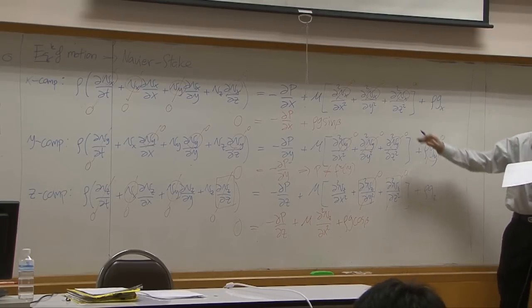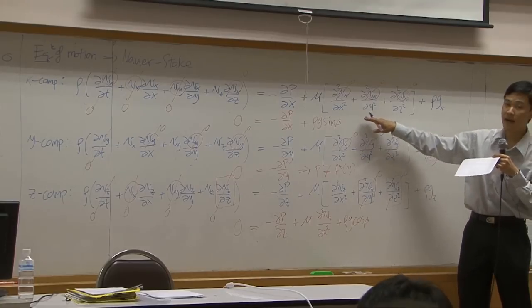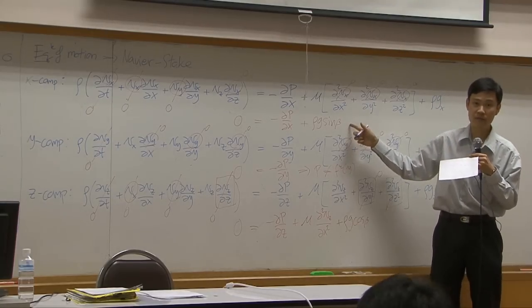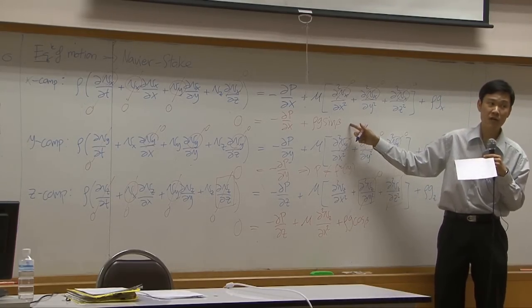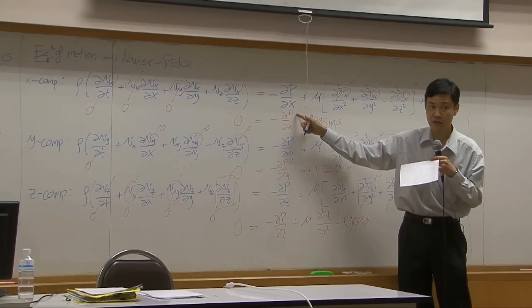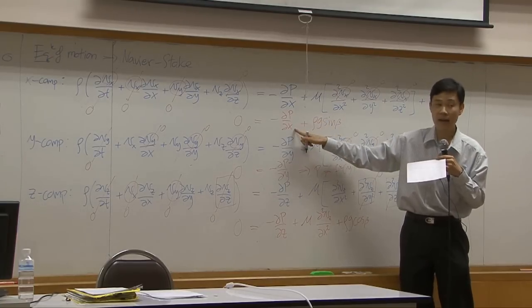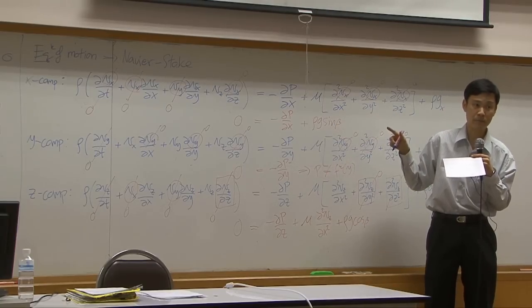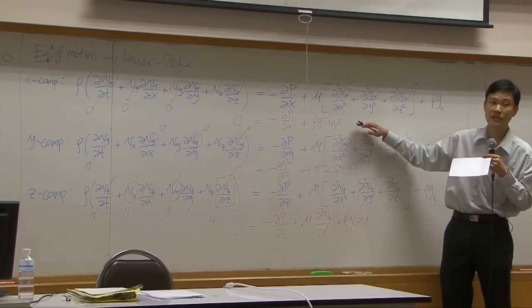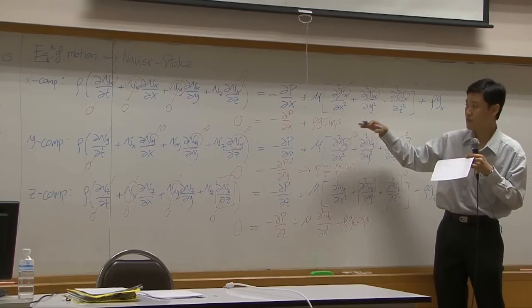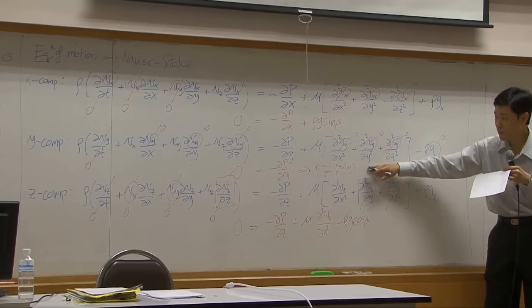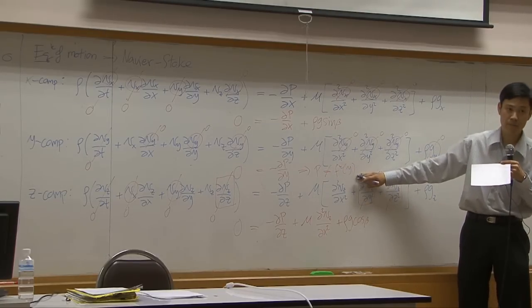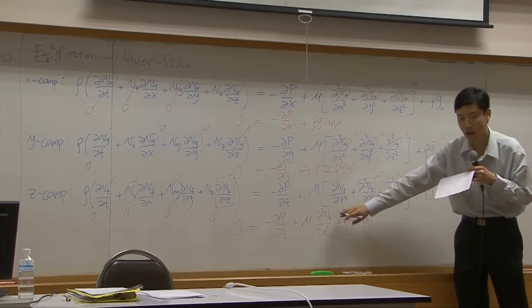Now, looking at the first equation — the x-direction balance — integrating it gives you pressure as a function of x. It is essentially a pressure profile in the x direction; it does not give you the velocity profile. If you are interested in pressure, just integrate that equation. The second equation only tells you that pressure does not change with respect to y. The third equation gives you the velocity profile.